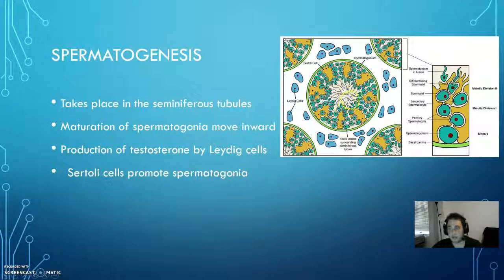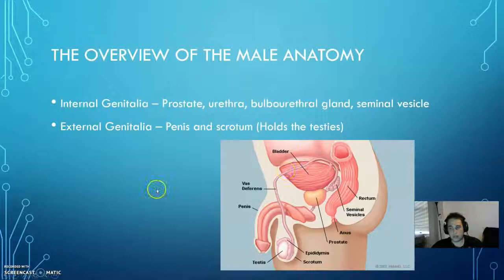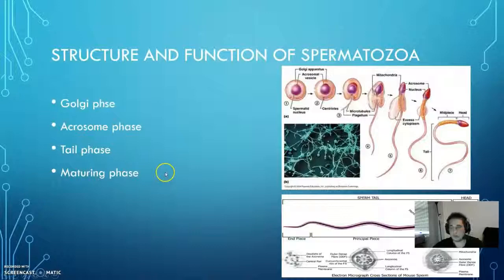From there, it's going to travel through the epididymis and then through the vas deferens, where it will receive fluids from the seminal vesicles and then be ejaculated out, hopefully to fertilize an egg. That's the maturation of a sperm cell.